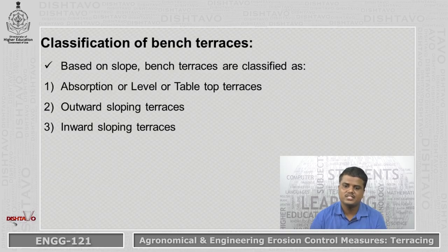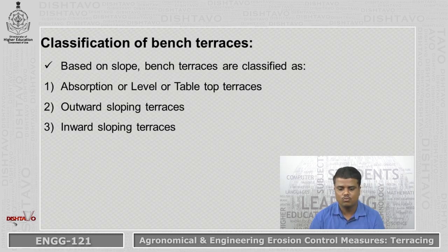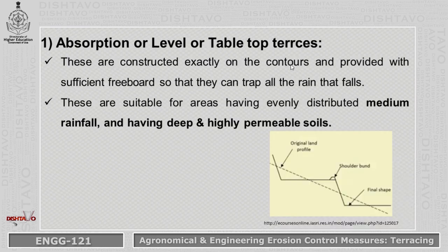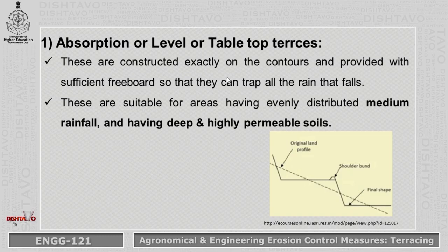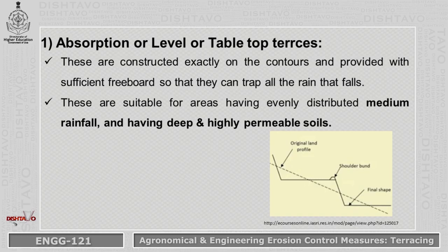Based on slope, bench terraces are classified into three types: level or table-top terrace, outward sloping terrace, and inward sloping terrace. The level or table-top terrace is shown in the diagram — this is the hill, and we cut this slope to make a level, flat land on which we cultivate crops. These are constructed exactly on the contours and provided with sufficient freeboard so that they can trap all the rainfall. These terraces are suitable for areas with evenly distributed medium rainfall and deep, highly permeable soil — so in coastal regions like Goa, this type is not used because rainfall is high and soil is not very deep.